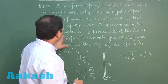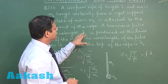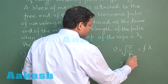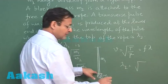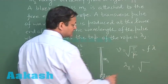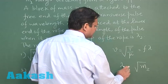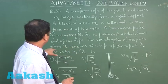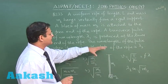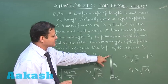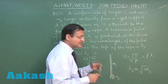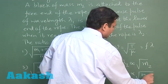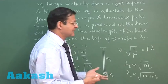The wavelength λ1 produced at the lower end is proportional to √m2, since the tension at the bottom supports only mass m2. At the top of the rope, the tension supports both masses, so λ2 is proportional to √(m1 + m2) times g.